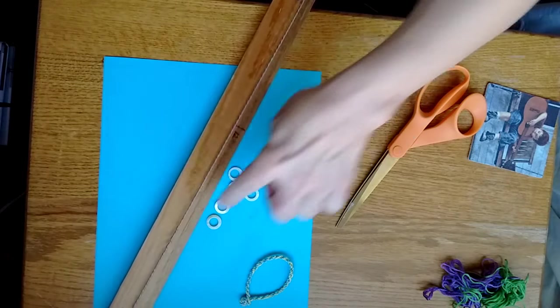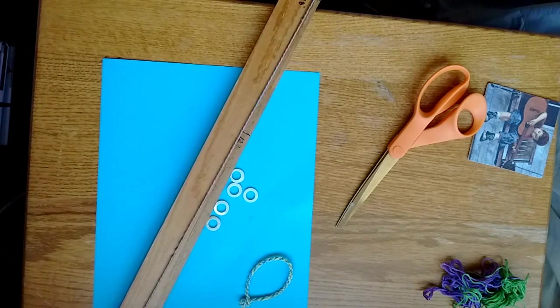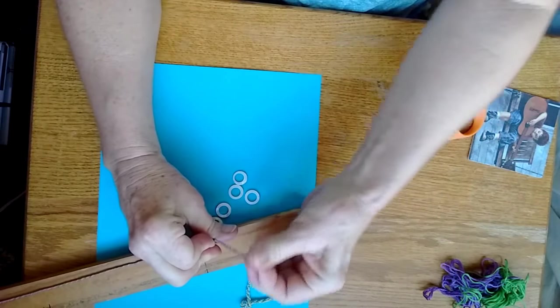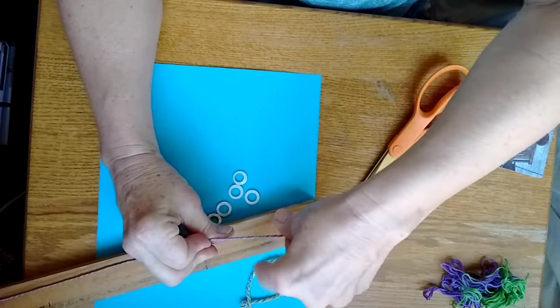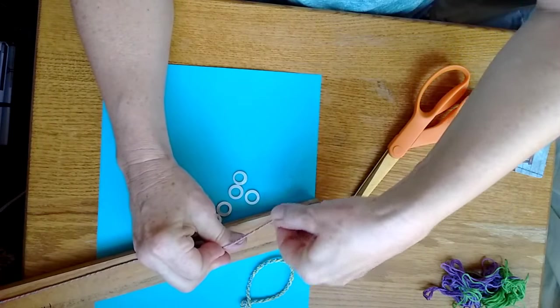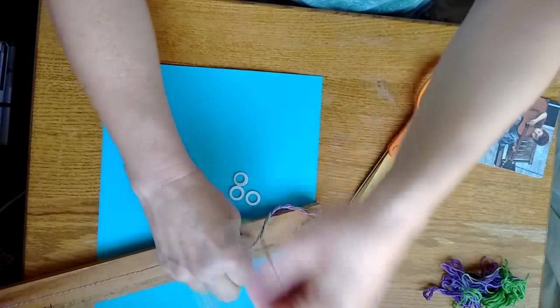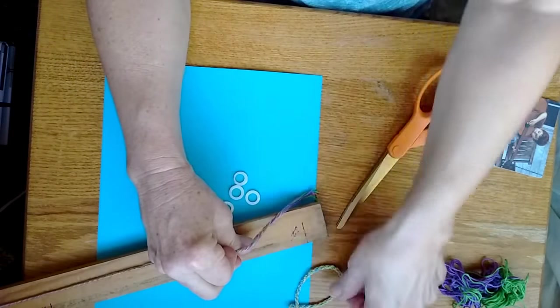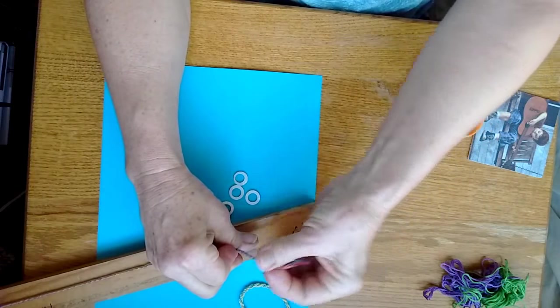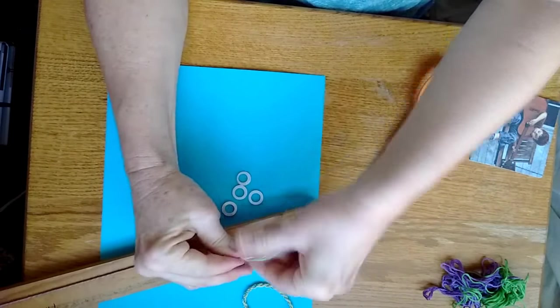All right so I'm almost to the end twisting. See how it's bunching up? That's what we want, to get to the very end. I'm just twisting, twisting. Now everybody's size may be different. If your wrists are thinner, mine are pretty thick, so this one won't fit me but that would fit probably a nine-year-old. Keep twisting, keep twisting.